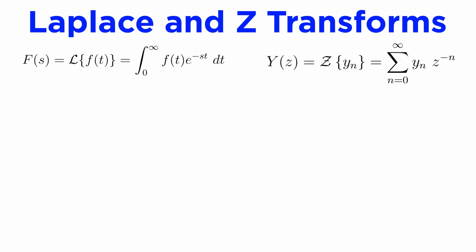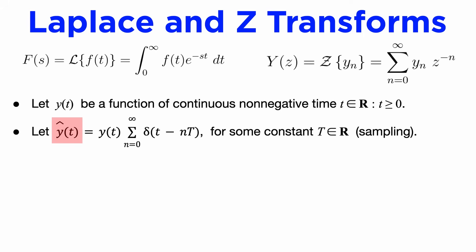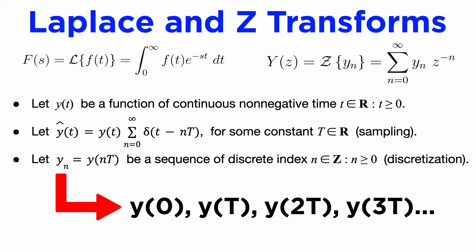Finally, we can formalize the connection between the Laplace and z-transforms. If we let y of t be a function of a continuous time variable t, we can consider what's called the sampled representation of y, in which we multiply it by a periodic set of Dirac delta functions spaced at some constant sampling interval capital T. Let's consider discretizing our function y of t with the same period capital T, which simply means we produce a sequence of values y of 0, y of t, y of 2t, y of 3t, etc., and call this sequence y sub n.